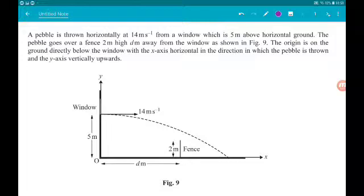The pebble goes over a fence 2 metres high, d metres away from the window as shown in Figure 9. The origin is on the ground directly below the window with the x-axis horizontal in the direction in which the pebble is thrown and the y-axis vertically upwards.